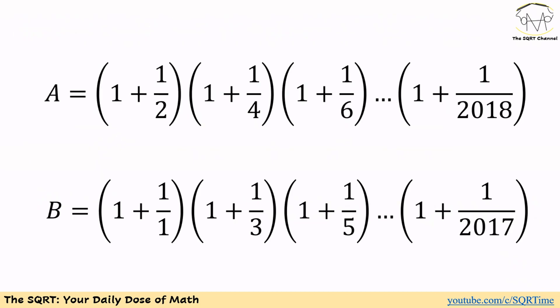To solve this problem we are going to use a very interesting trick. Let's take another look at expression A, the original expression. We have a product of various terms. Let's ignore the '1 plus' in each term and just focus on the fractional part: we have 1 over 2, 1 over 4, 1 over 6, and finally 1 over 2018.